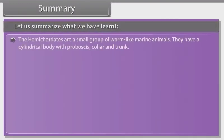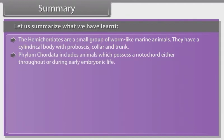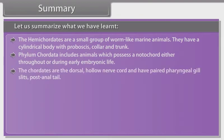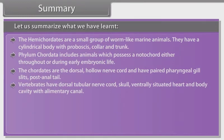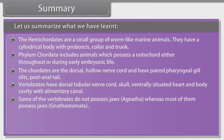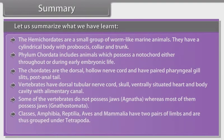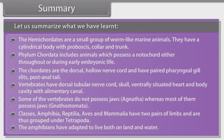Summary. Hemichordates are a small group of worm-like marine animals with cylindrical body having proboscis, collar and trunk. Phylum Chordata includes animals which possess a notochord either throughout or during early embryonic life. Chordates have a dorsal hollow nerve cord and paired pharyngeal gill slits, and a post-anal tail. Vertebrates have a dorsal tubular nerve cord, skull, ventrally situated heart and body cavity with alimentary canal. Some vertebrates do not possess jaws (Agnatha), whereas most possess jaws (Gnathostomata).